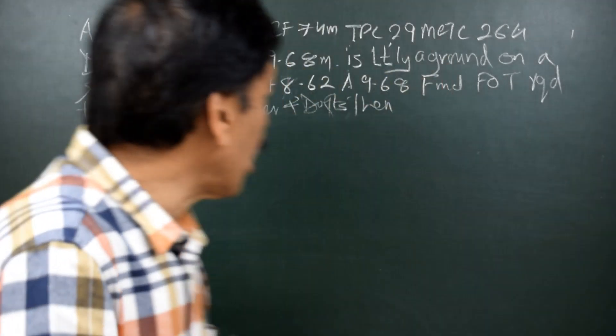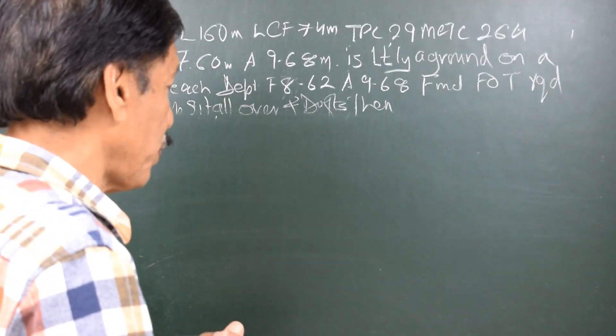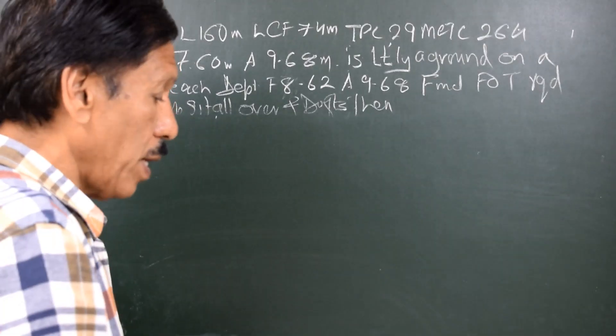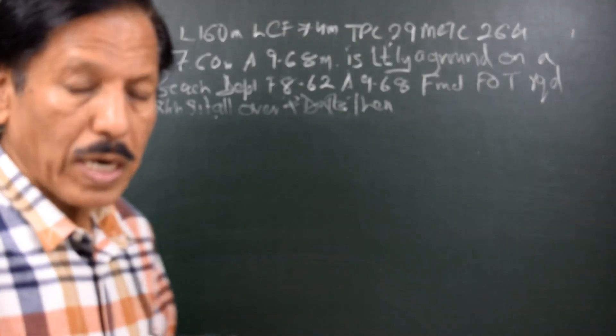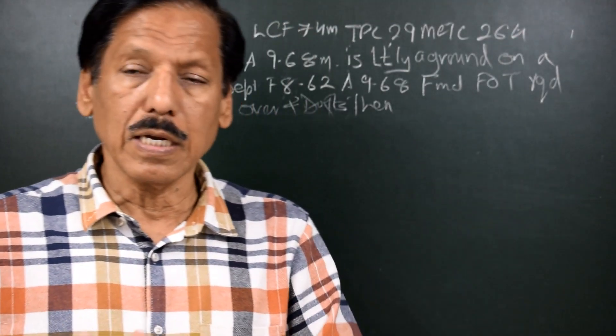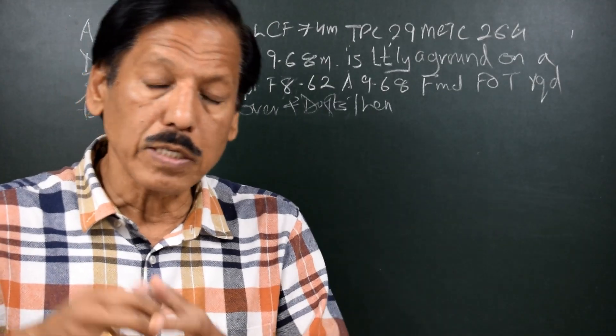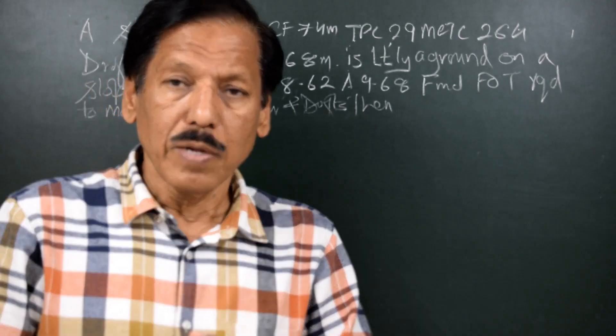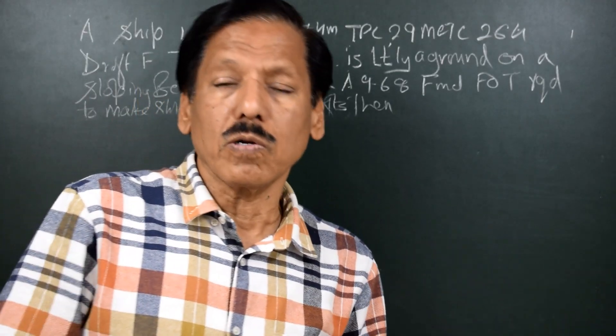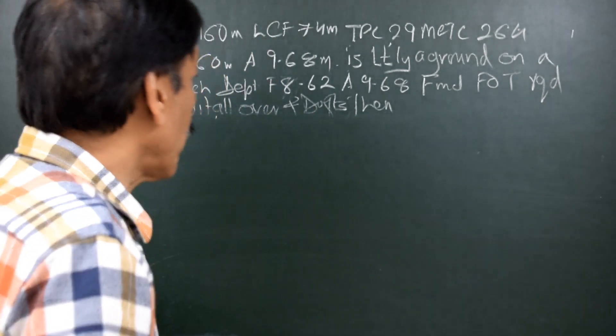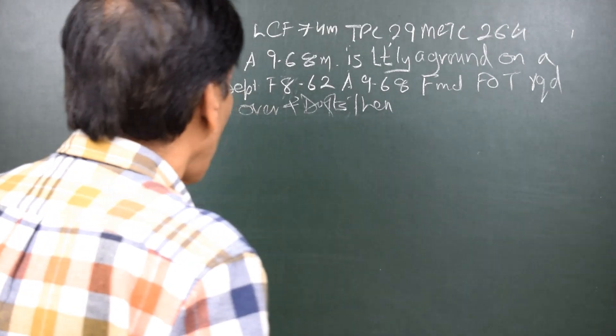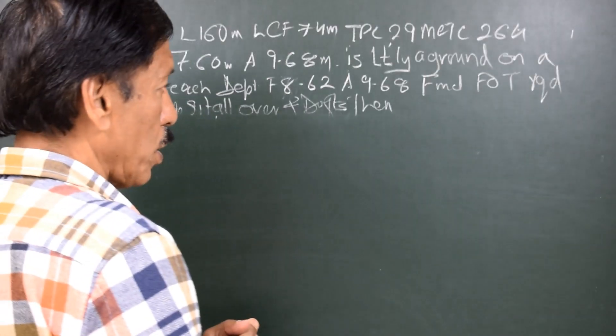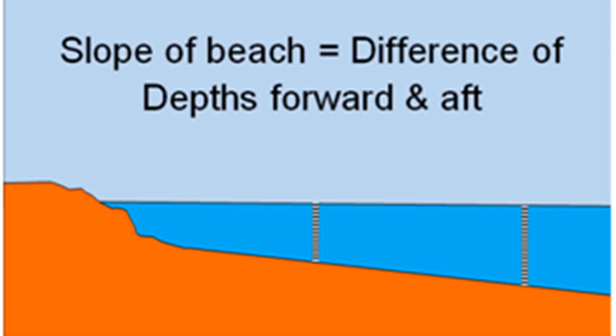So lightly aground means upthrust is equal to zero. In such a situation, whenever the vessel is aground, you must order the sounding or the depth of water all around the ship. When the soundings were taken of outside water, it was found that the forward 8.62 and aft 9.68.